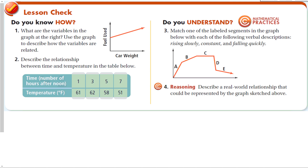Let's review this section. The variables in the graph are car weight and fuel used — the heavier the car, the more fuel you use. Describing the relationship between time and temperature: as the hours after noon increase, it gets a little warmer, then starts to get colder as the sun goes down. Matching labeled graph segments: rises slowly is B, constant is C, falling quickly is D, falling slowly is E, and rising quickly is A.